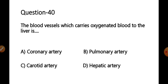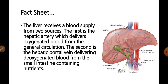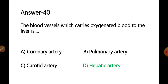Question 40: The blood vessel which carries oxygenated blood to the liver is — options: A) coronary artery, B) pulmonary artery, C) carotid artery, D) hepatic artery. The liver receives blood from two sources: the hepatic artery, which delivers oxygenated blood from the general circulation, and the hepatic portal vein, which delivers deoxygenated blood from the small intestine containing nutrients. The correct answer is option D — hepatic artery.